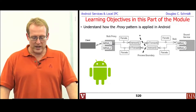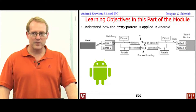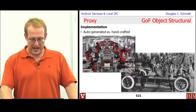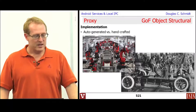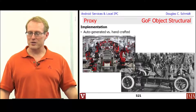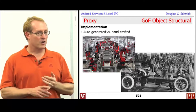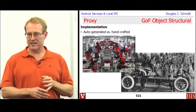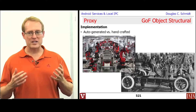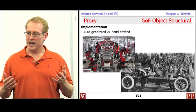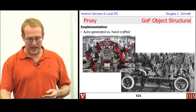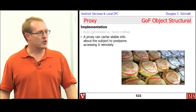So in Android, they implement this by automatically generated code. Here are some of the implementation considerations you have to think about when you're using proxies. One is, are the proxies automatically generated, like a robotic assembly line, or are they something that's handcrafted? There are tradeoffs. For the most part, people rely on auto generation now.